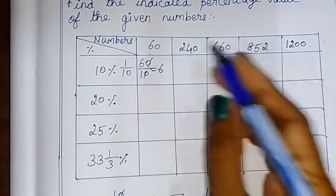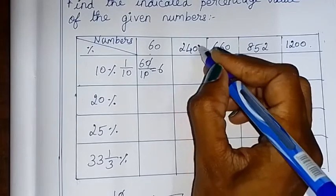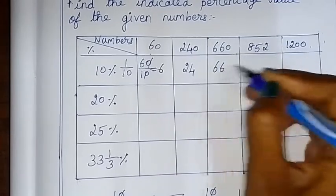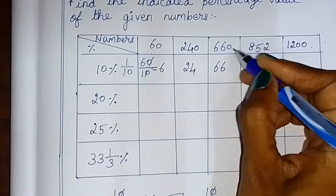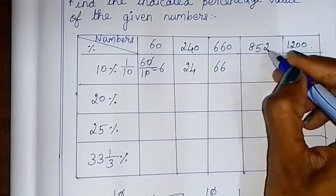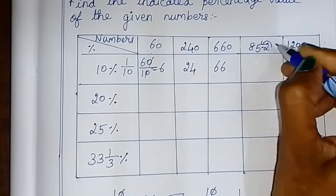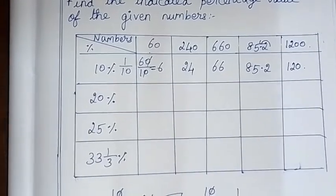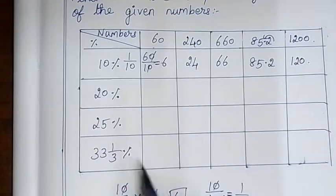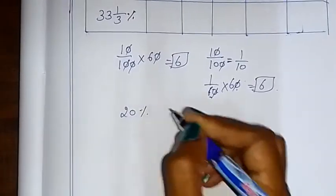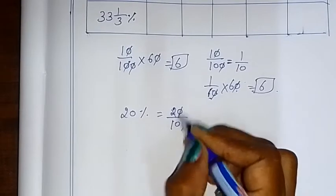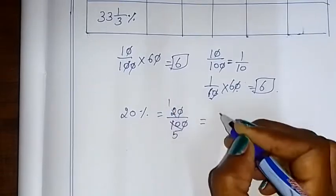When we cancel 0, 20% of these values, 20% of these values simplified form, 20% simplified fraction is 20 by 100. Cancel the 0. 2 table: 2 ones are 2, 2 fives are 10, simplified form 1 by 5. The 20 percentage value is 1 by 5 of this number.